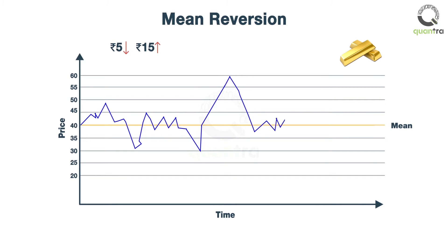A mean reversionist would sell gold. On the other hand, if the gold prices had suddenly fallen down one day by 30 Indian rupees, then the mean reversion strategy would have been to buy gold, expecting the prices to go up.